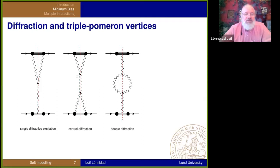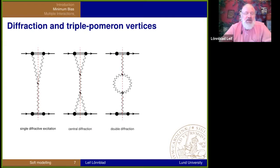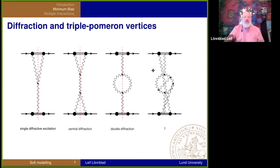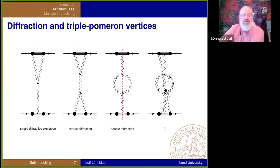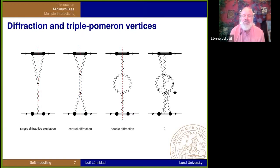With central diffraction you have a flat distribution in the forward and backward directions, but basically empty in the middle. You can make arbitrarily complicated diagrams with pomeron exchanges, and for each diagram you can cut it basically any way you like. In Regge theory, there are tools for how to calculate the cross-section for each configuration.